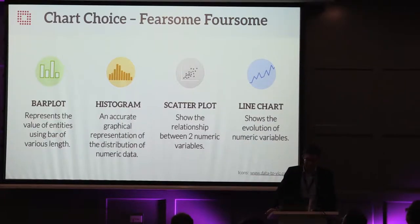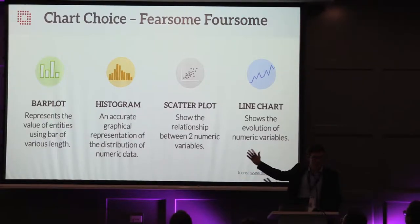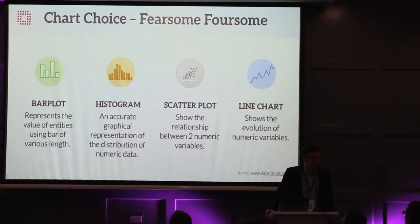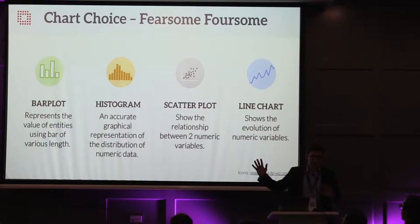The fearsome foursome breaks down to: are you looking at one variable? That's a histogram. Are you looking at many different levels in a single variable? That's a bar plot. Are you looking at two variables? That's a scatter plot. And are you looking at evolution over time? That's a line plot. You're going to get most of your points across with these graphs and their variants — bar plots can be horizontal, vertical, or stacked; histograms can have a density plot; scatter plots can be 3D; line charts can have multiple or stacked lines.